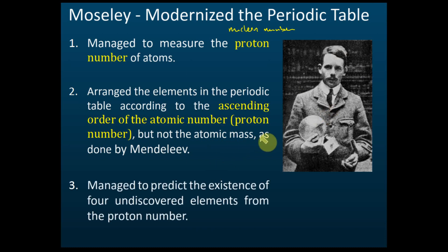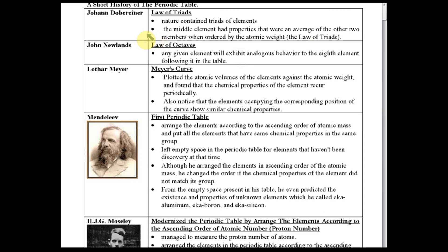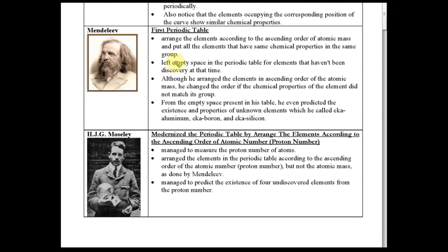By using his periodic table, Moseley managed to predict the existence of four undiscovered elements from their proton numbers. That is Moseley's contribution. For Döbereiner, you just need to know the Law of Triads; for Newlands, the Law of Octaves; and for Meyer, the Meyer curve — plotting atomic volume against atomic weight.